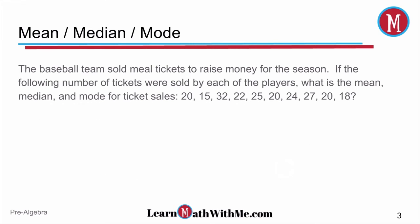The next problem says the baseball team sold meal tickets to raise money for the season. If the following number of tickets were sold by each of the players, what is the mean, median, and mode for ticket sales? They give you the number of ticket sales each person made. In this particular problem, we're looking for three different things: the mean, the median, and the mode.